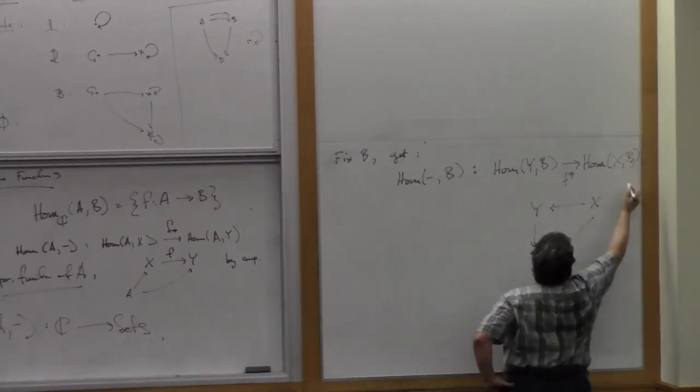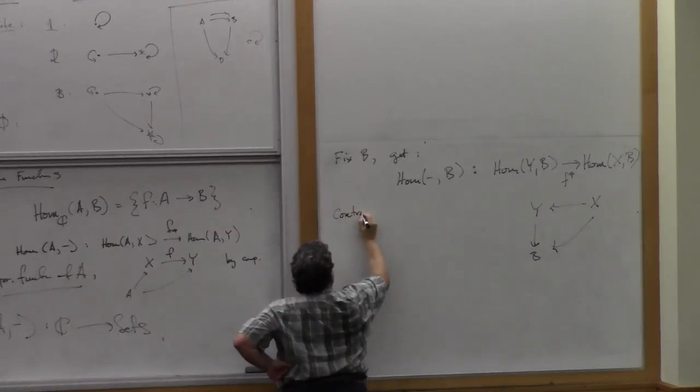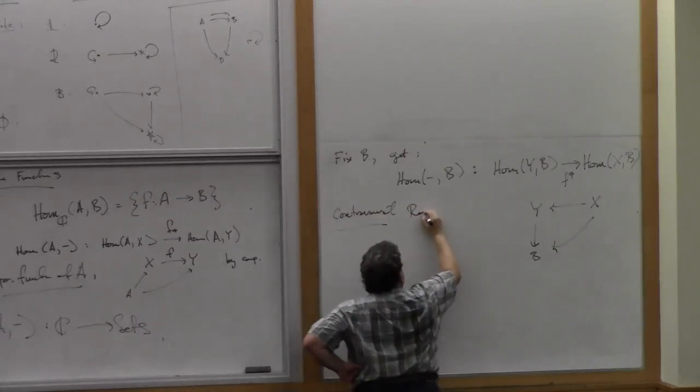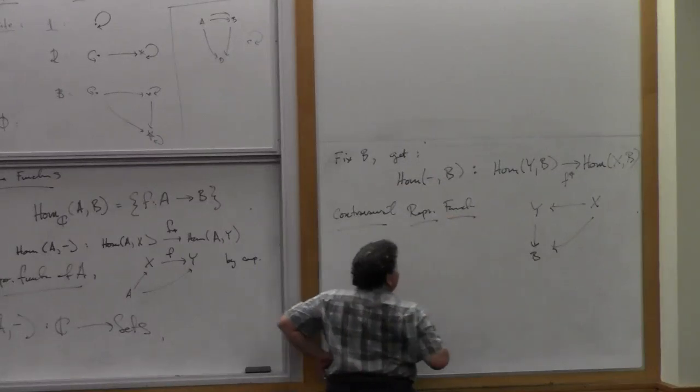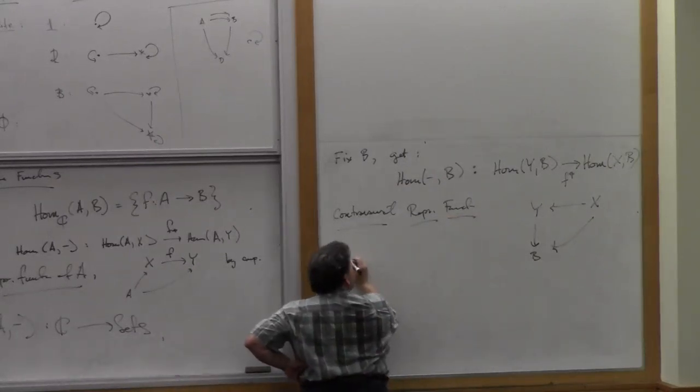And that gives me something over here. So this is the contravariant representable functor. These are really quite important, and you'll see later on what they're good for.